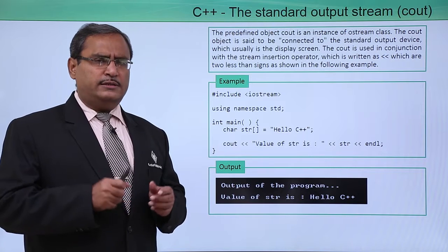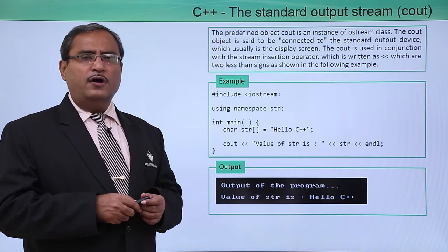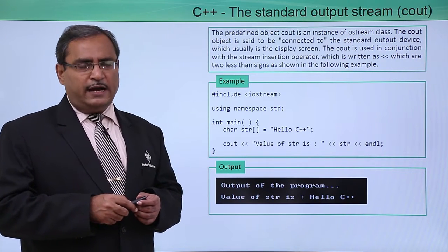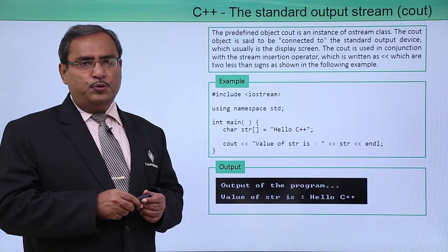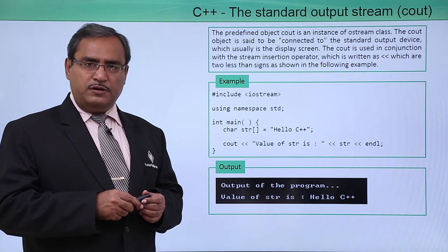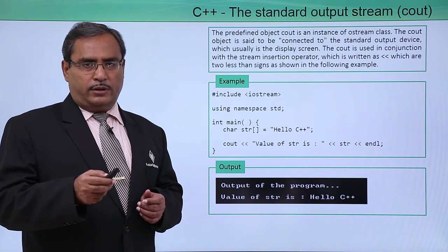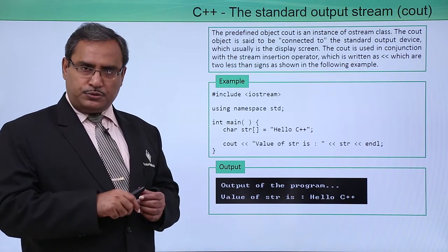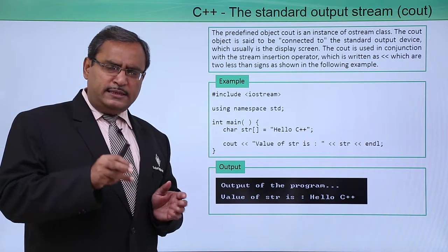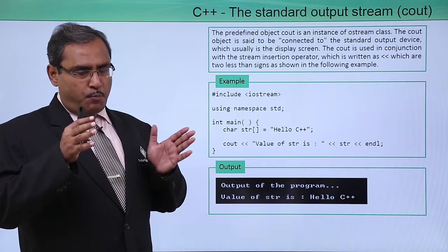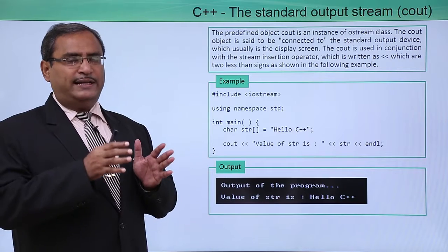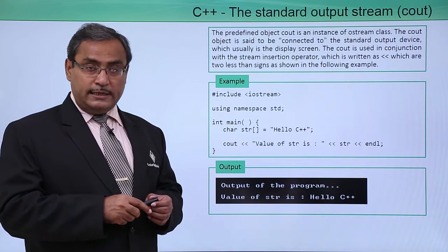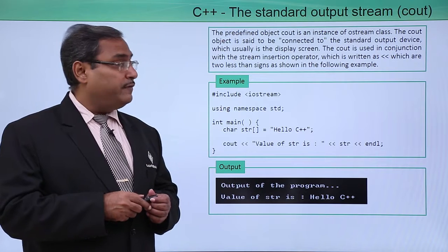Cout is actually a short form of 'console out.' The console is the default input or output device for receiving inputs and displaying outputs. In our system, the monitor or display unit is the console, which serves as the default output device.